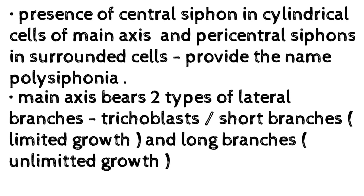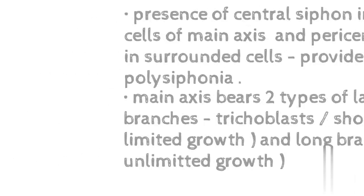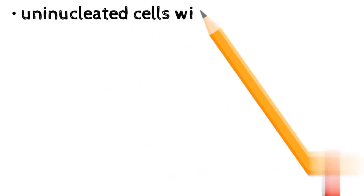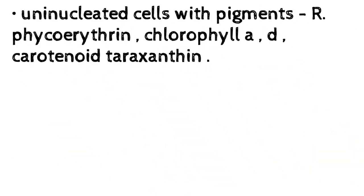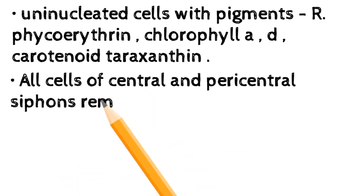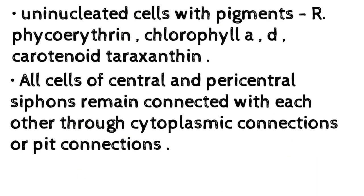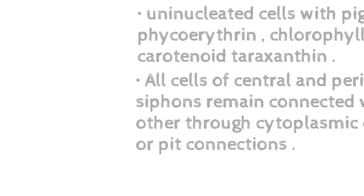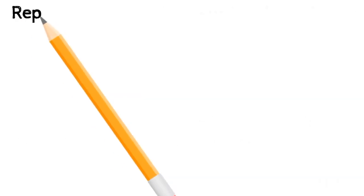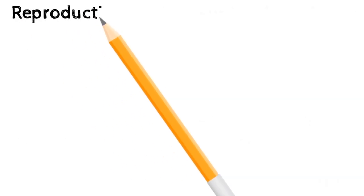The main axis bears two types of lateral branches: trichoblasts — short branches with limited growth — and long branches with unlimited growth. Nucleated cells with pigments include phycoerythrin, chlorophyll a and d, carotenoid, and taraxanthin. All cells of central and paracentral siphons remain connected through cytoplasmic connections or pit connections.